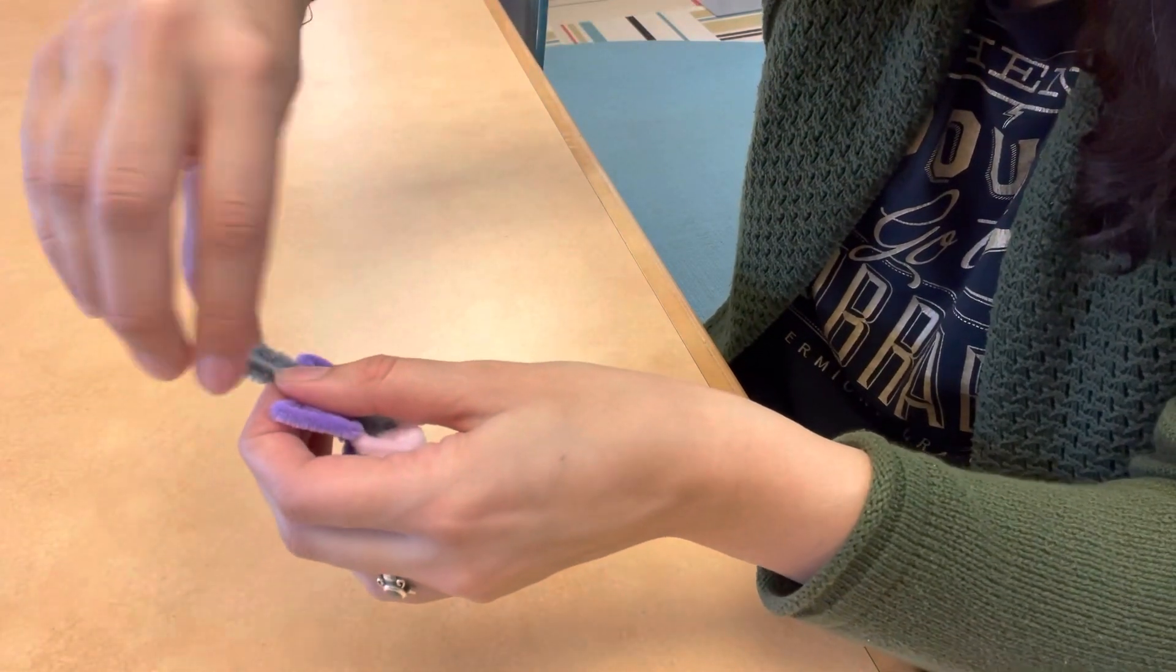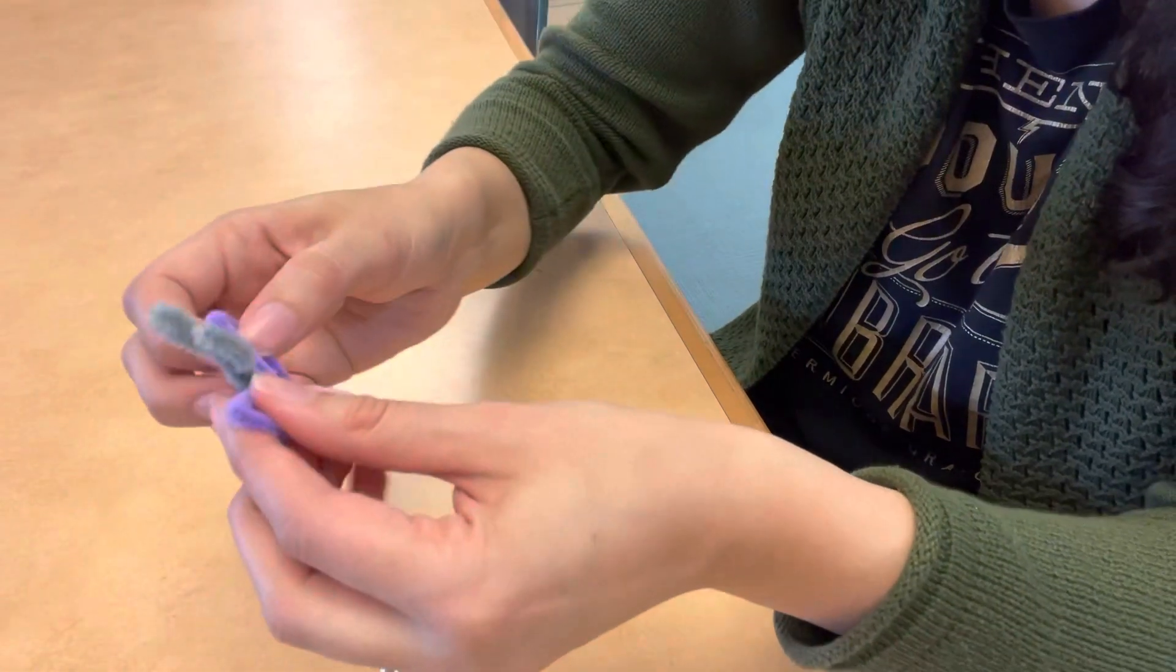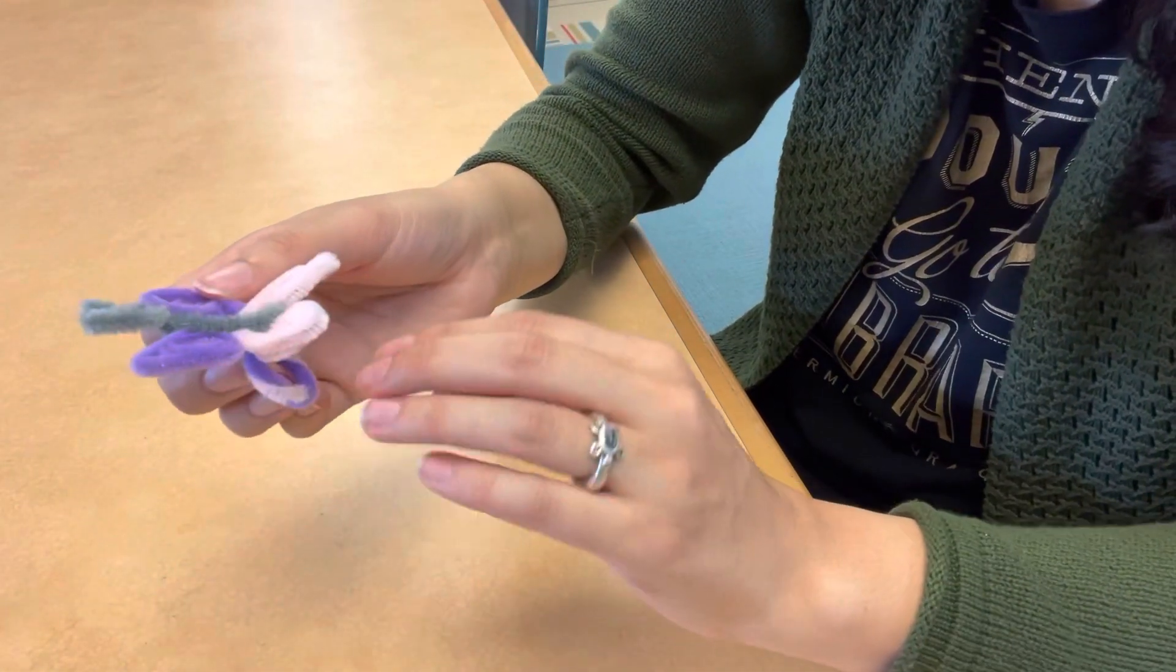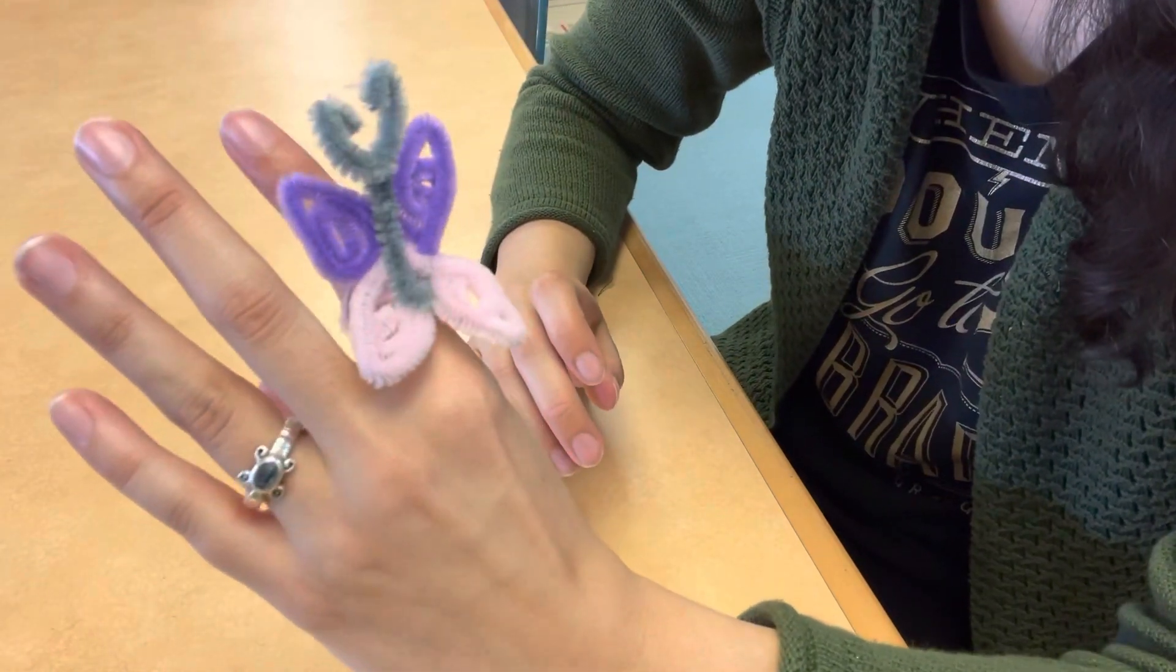And then you're going to curl those sides in just slightly. Those are going to be the antennas. And then you're done. You made your very own mariposa ring.